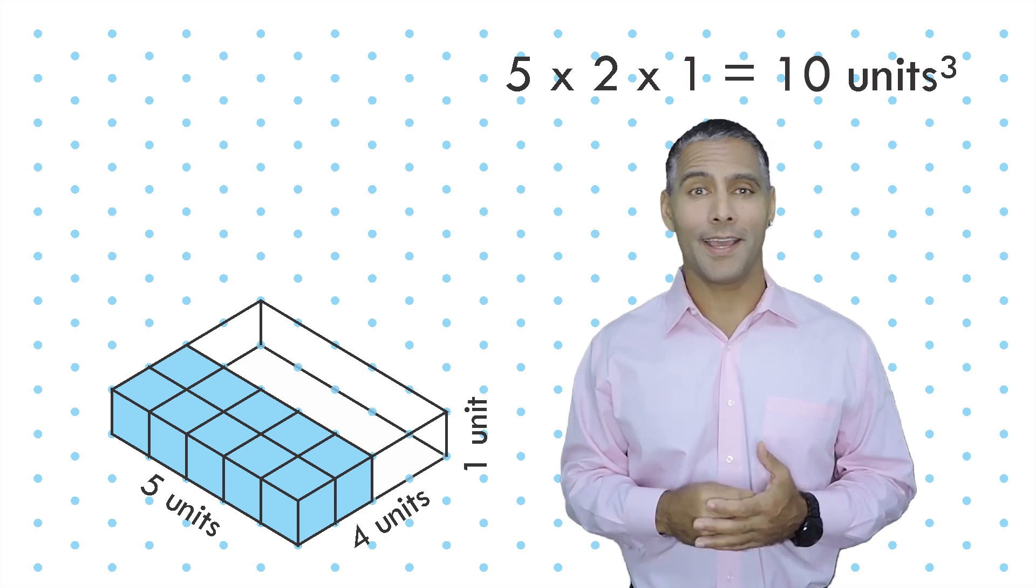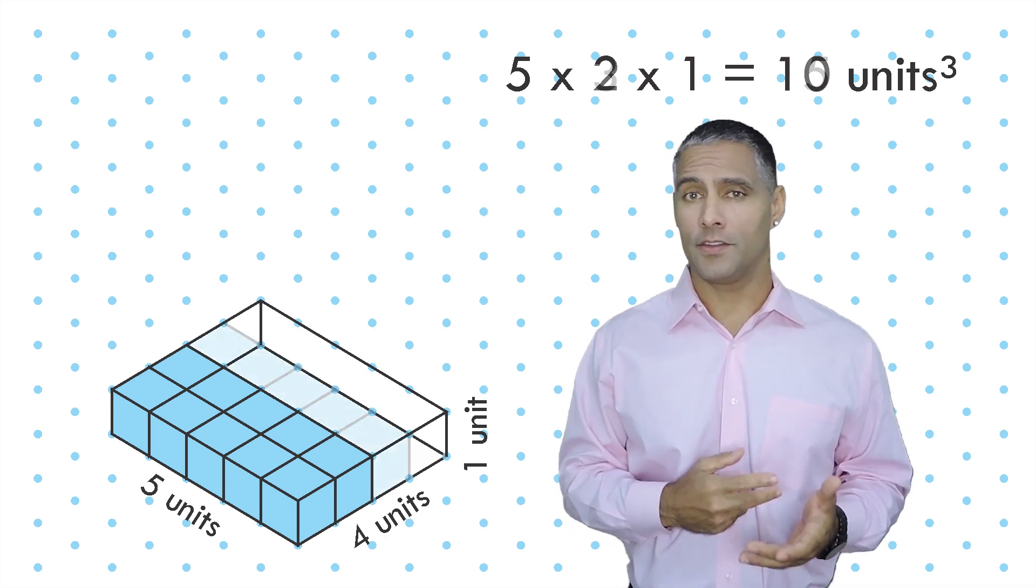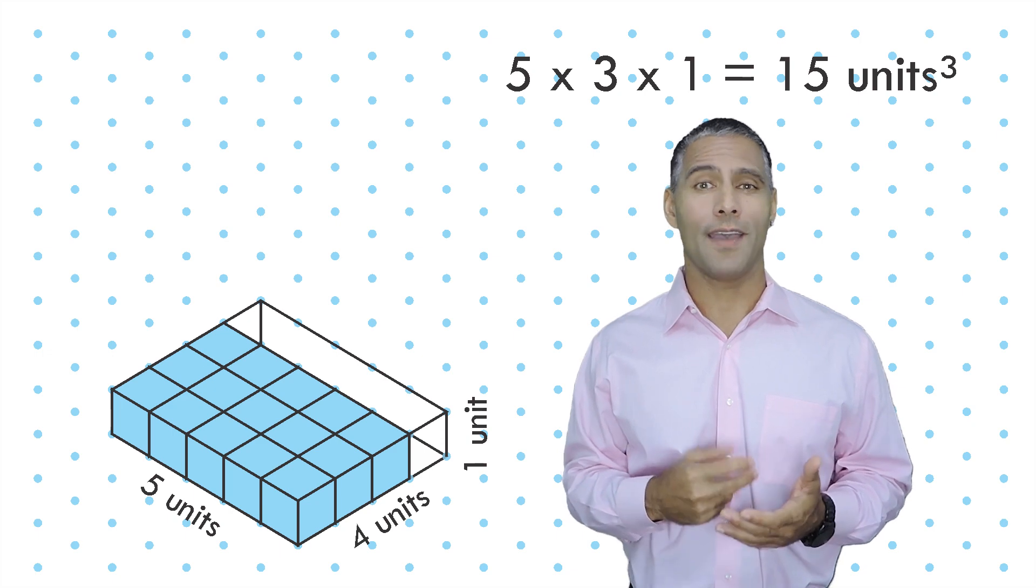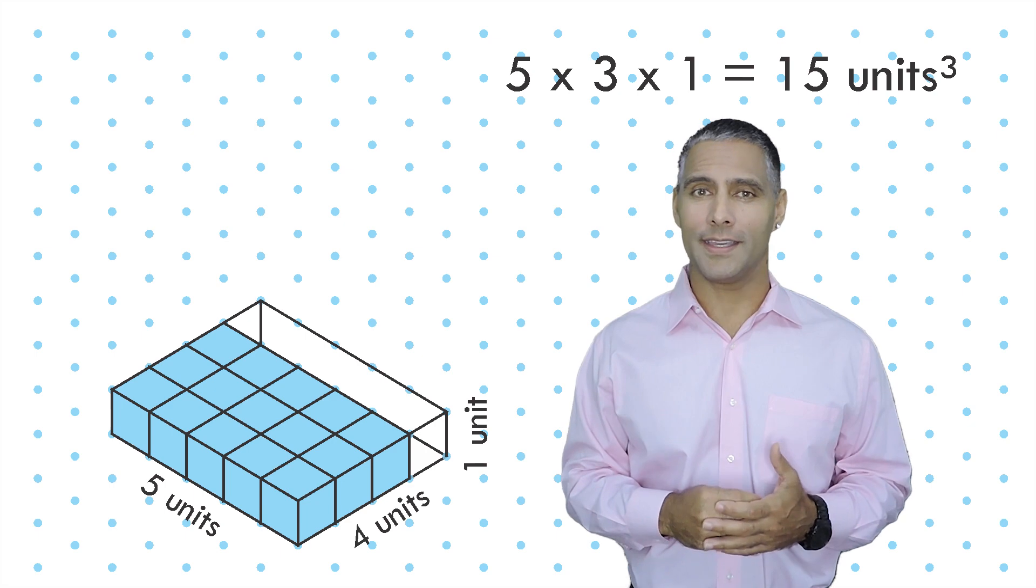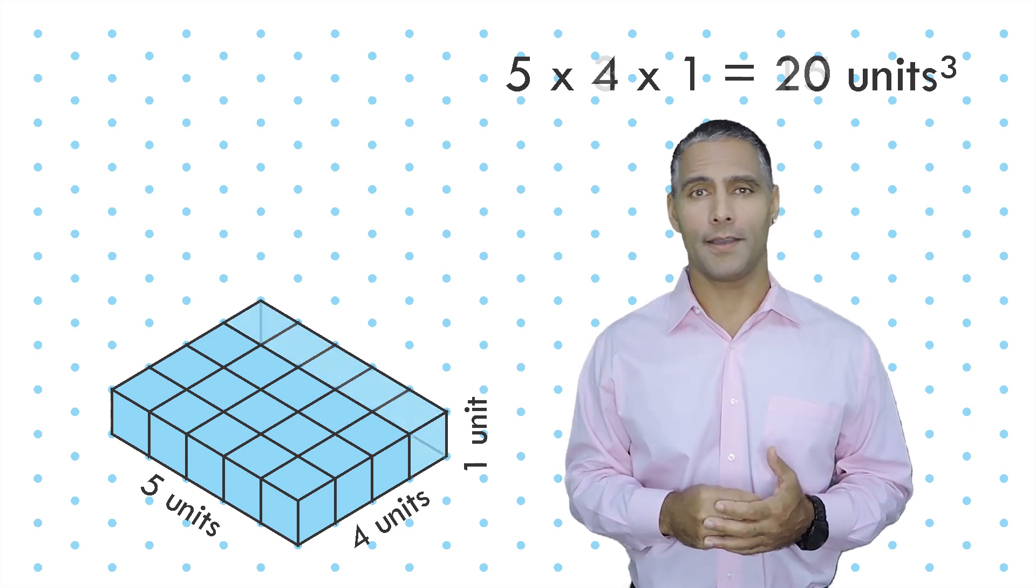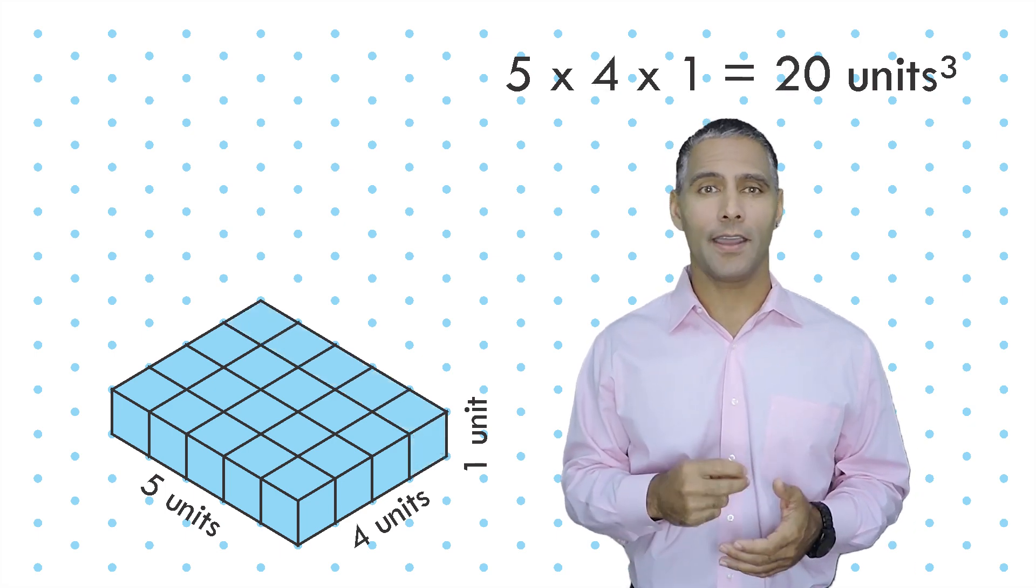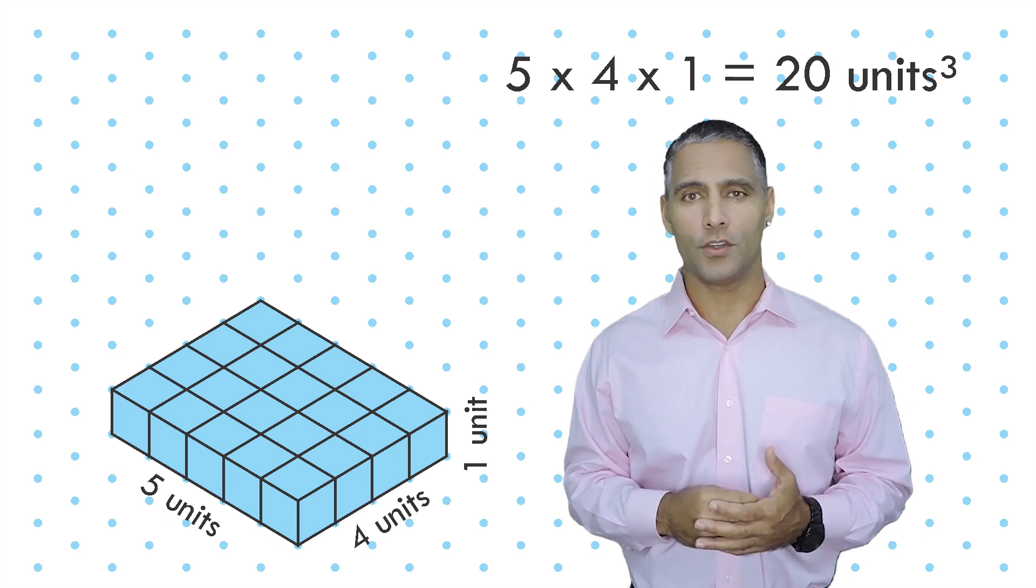So now we have a volume of ten cubic units. Let's add another row of five. Now we have three sets of five cubic units or fifteen cubic units. And let's pack the entire container with a fourth row of five cubic units. Now the entire prism is packed with twenty cubic units.